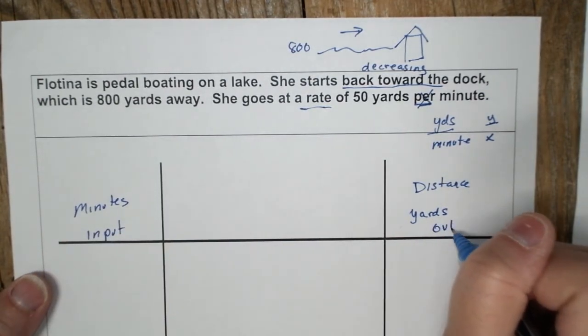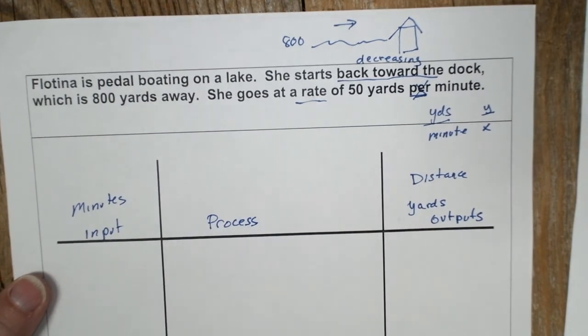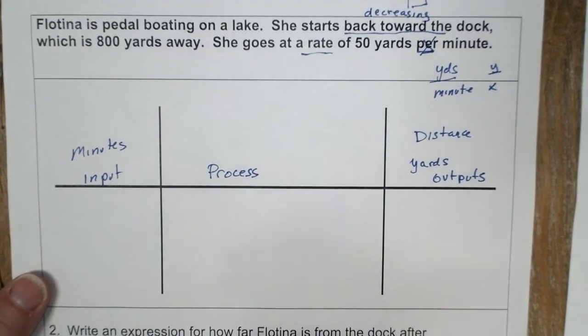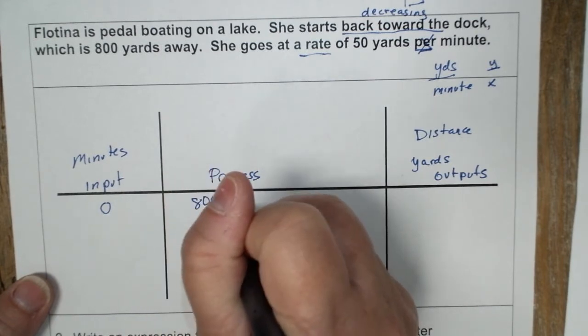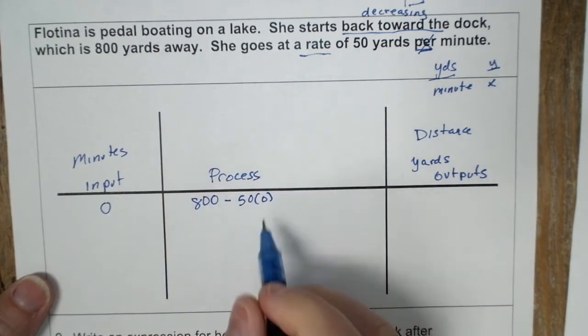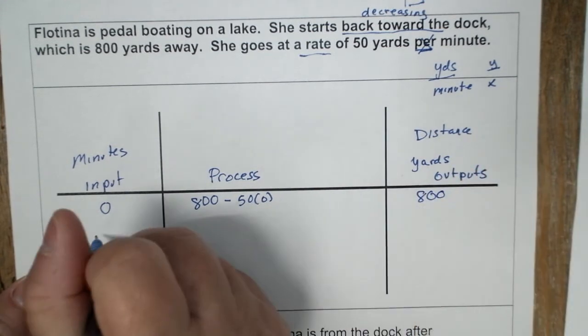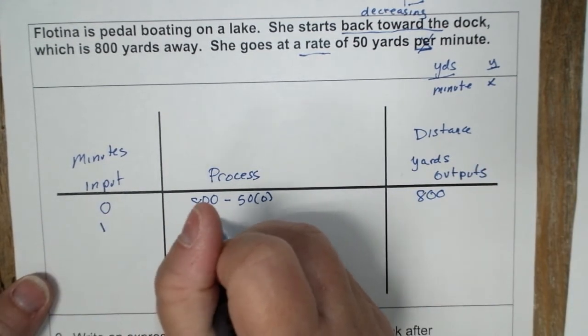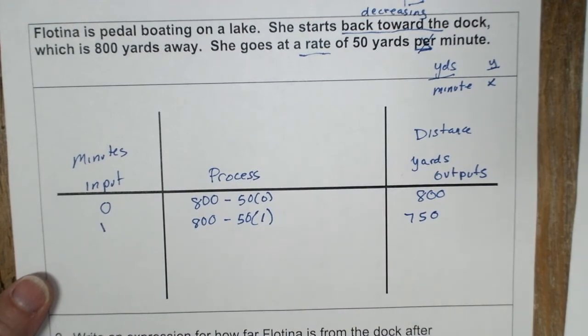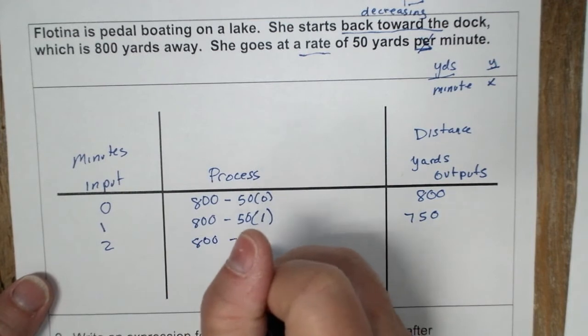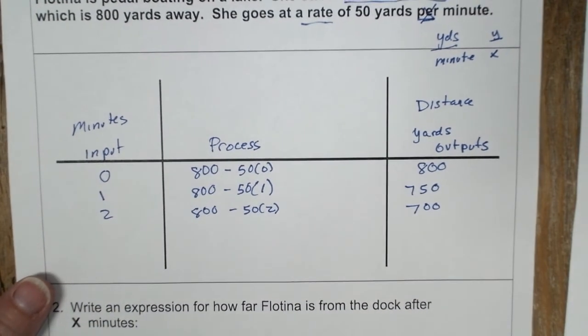So you're inputting minutes and you're outputting yards. And you're going to go through a process. And in algebra, you really want to start with the zero because your initial point gives you a lot of information. So you start at 800. You don't go anywhere. That's the not going anywhere at zero, or the time is zero. And so that's 800. And then one minute, it's 800 minus 50 times one, which is 750. And then you have two, 800 minus 50 times two, which is 700. And then you have three.